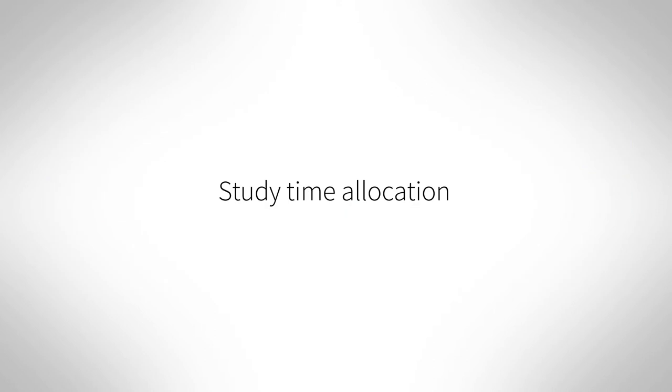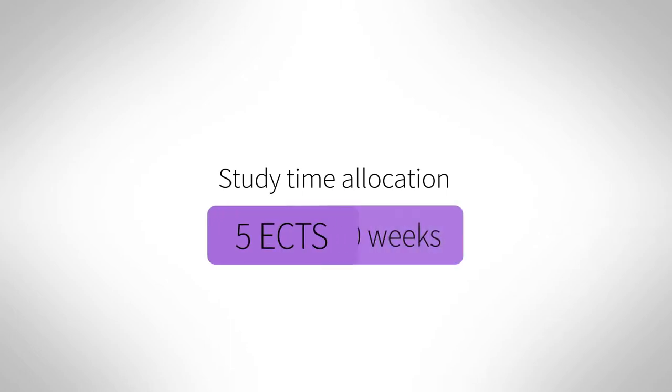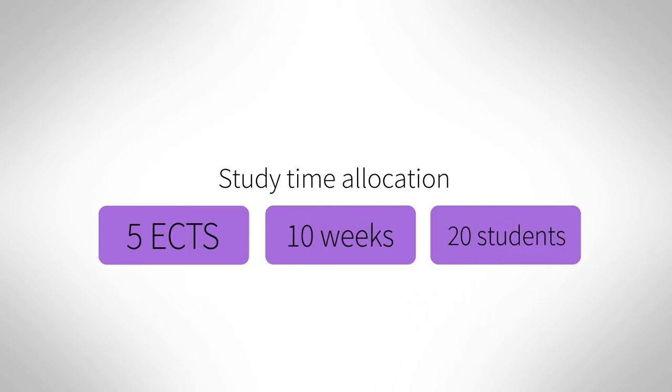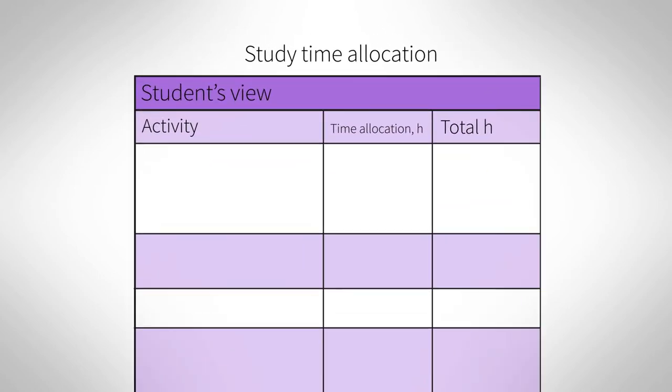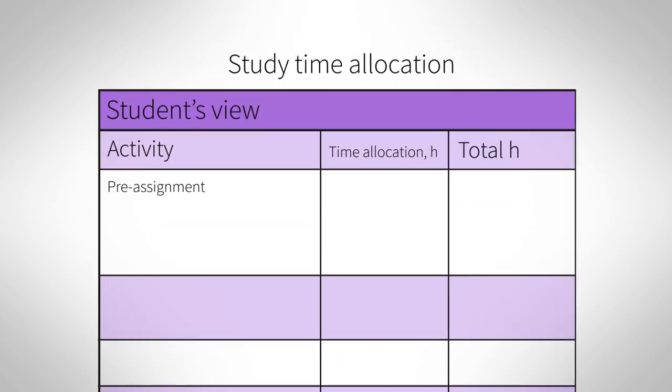Let's look at one example of calculating study time allocation. Our example course is five ECTS credits, its duration is 10 weeks, and it has 20 participants. Looked at from the student's view, the course starts with a pre-assignment before the teaching and learning sessions start. Based on previous experience with similar assignments and on collected student feedback, it has been estimated to take six hours for the student to complete the pre-assignment, which includes some time to think.